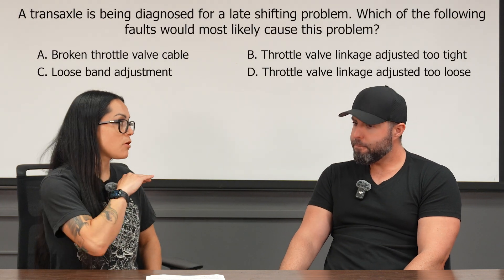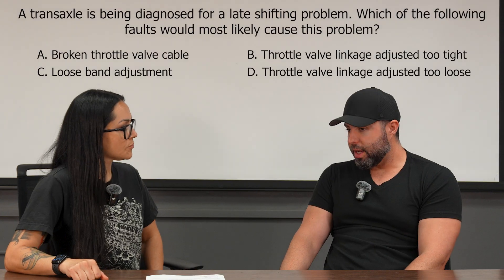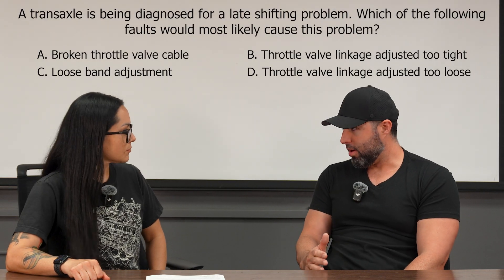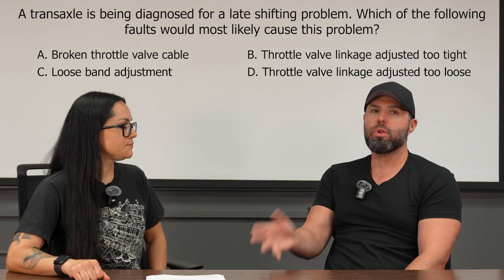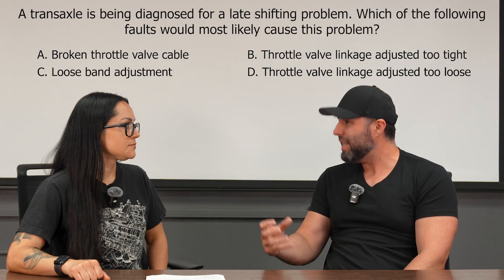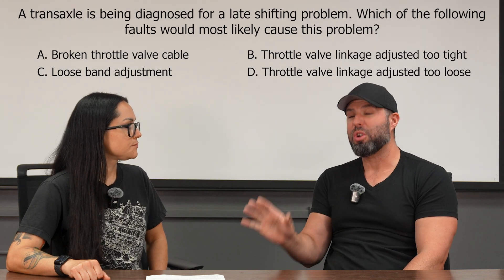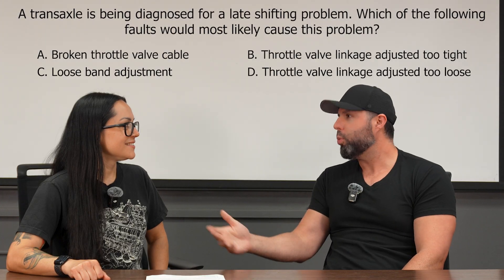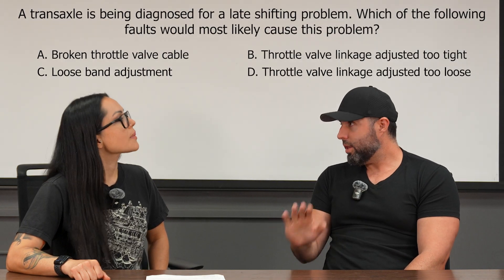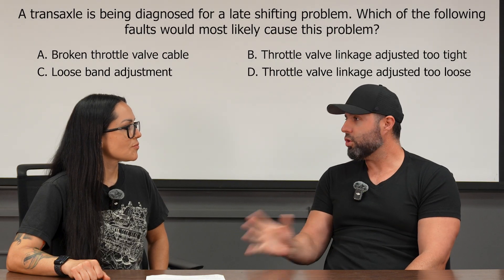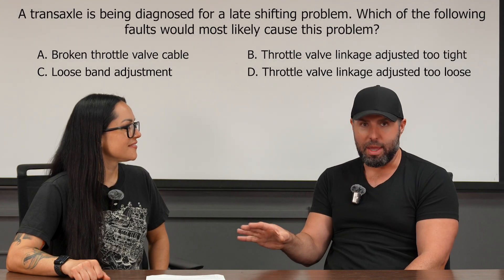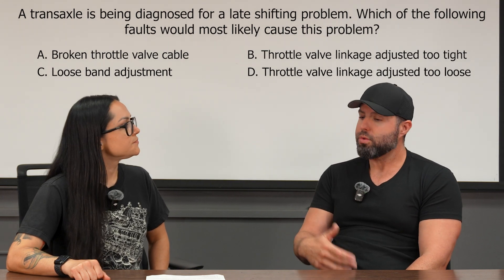A broken throttle valve cable is not the issue here because the transmission is shifting — just shifting late. If we adjust it too tight, it's going to think you're giving more throttle than you actually are, and we're going to expect it to shift later. Those old transmissions had governor pressure and throttle valve pressure controlling shift points. People would retrofit a 700R4 and forget to hook up the cable — they'd leave it and try to drive the car, which always ended in disaster because the transmission would start slipping right away.